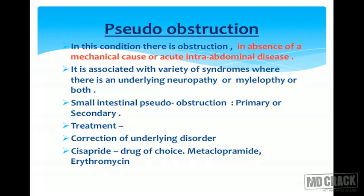Pseudo-obstruction is obstruction in the absence of a mechanical cause or acute intestinal disease. It is associated with a variety of syndromes where there is an underlying neuropathy or myelopathy or both. Small intestinal pseudo-obstruction can be primary or secondary. Treatment is correction of the underlying disorder. Cisapride is the drug of choice; metoclopramide and erythromycin are less preferred.